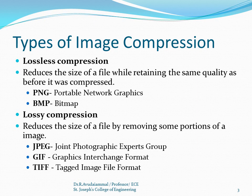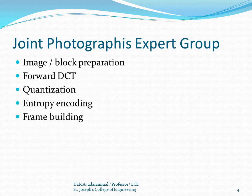In lossless compression, it reduces the size of a file while retaining the same quality as before it was compressed. Examples of lossless compression are PNG and BMP (bitmap format). In lossy compression, it also reduces the size of a file but by removing some portions of an image or some unneeded colors. In this session, I am going to discuss the Joint Photographic Expert Group, that is JPEG. In JPEG, it works on five stages: image and block preparation, forward DCT, quantization, entropy encoding, and frame.